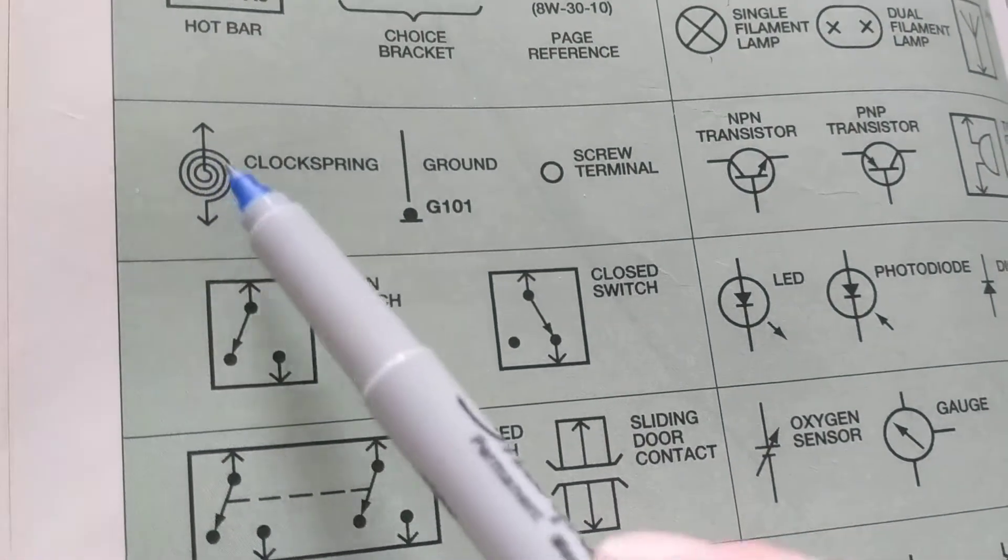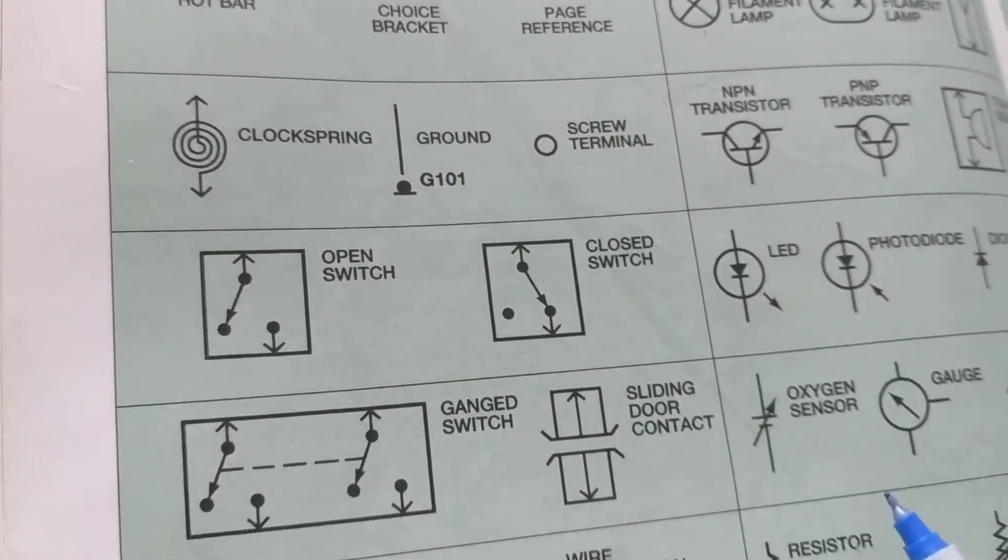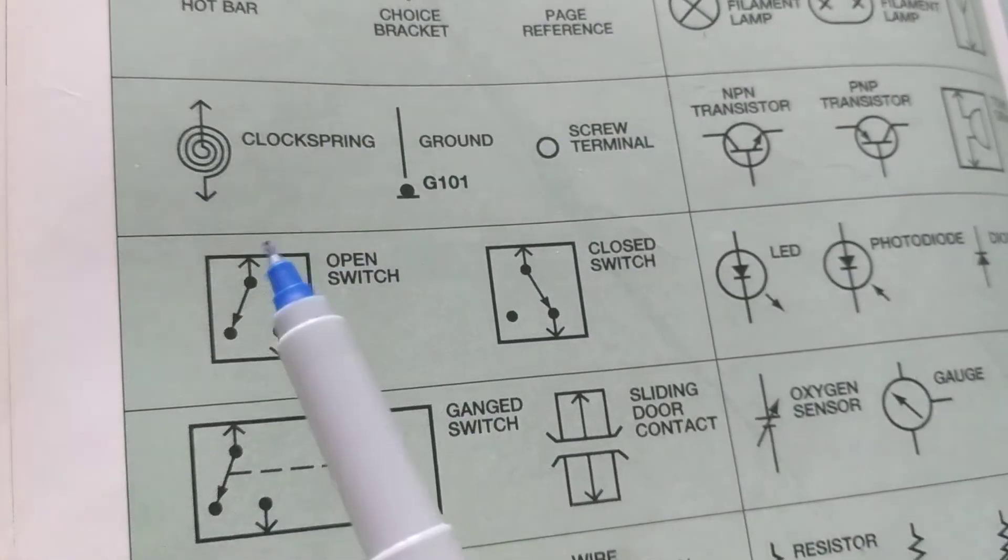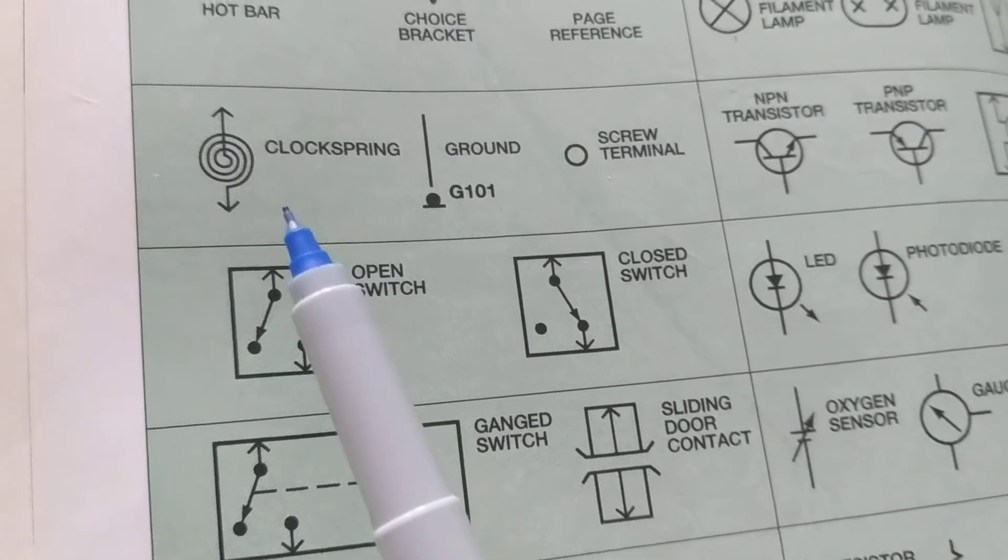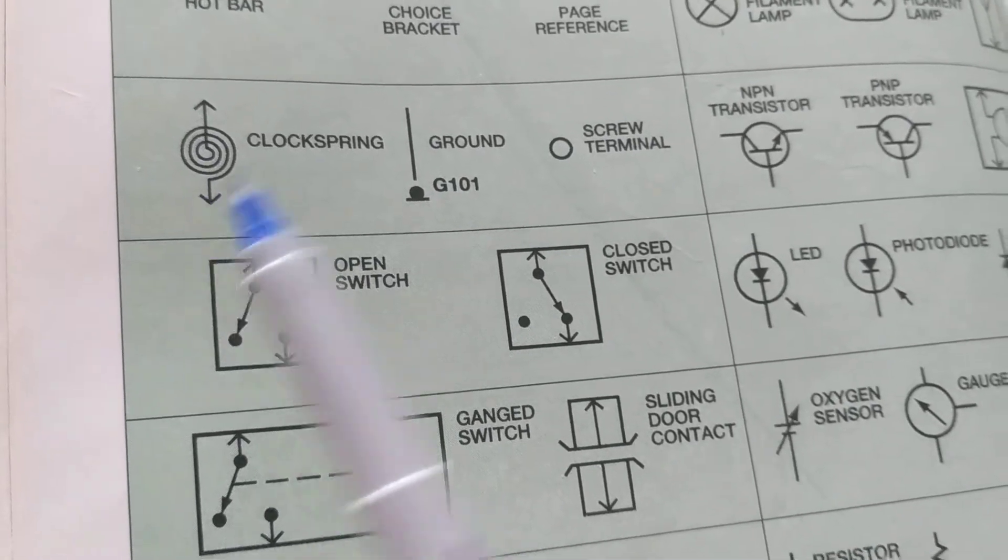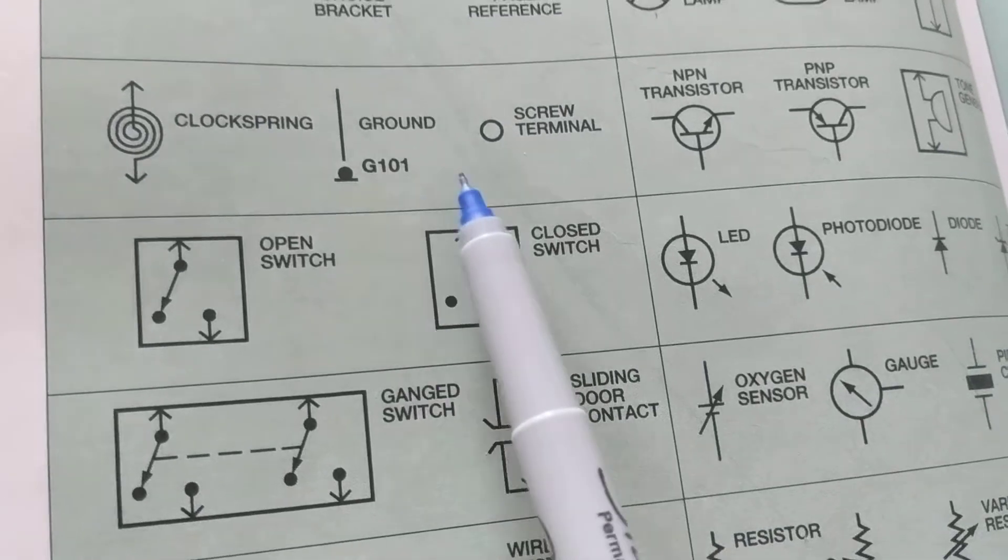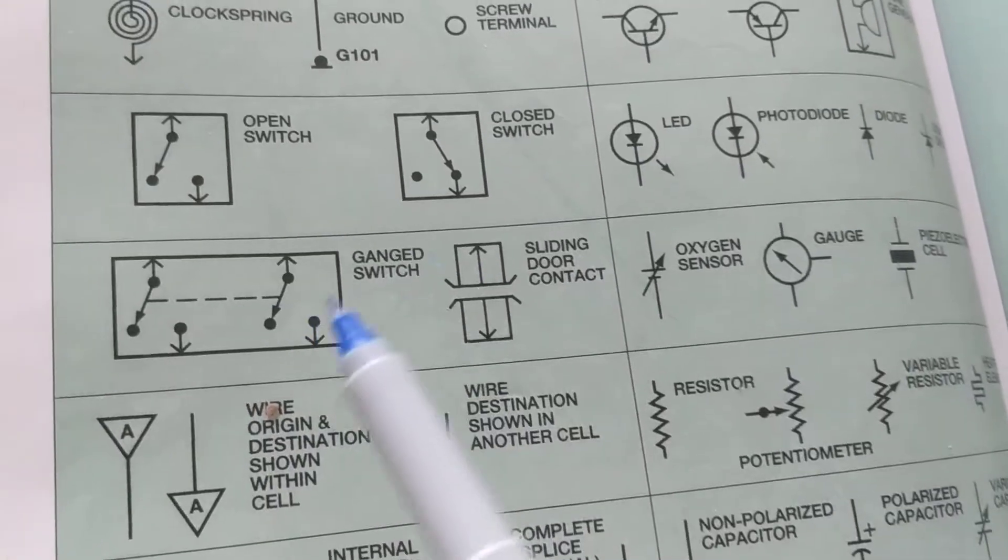The clock spring is a circle, meaning you can turn the steering wheel, doesn't affect the electrical part of the circuits for airbag module and horn circuits. This is a ground, so all these things will appear in the circuit today.